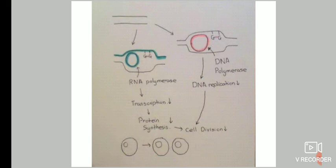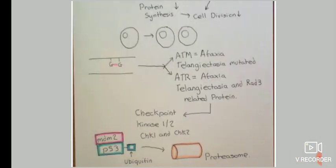Once the crosslinking is formed, the effect we see in the cell is decreased transcription, resulting in decreased protein synthesis, and also decreased DNA replication, ultimately leading to decreased cell division. This is the mechanism by which cisplatin acts at the cellular level.